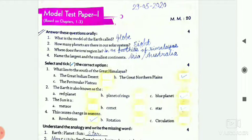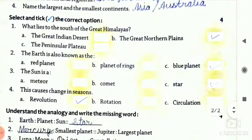Second question is, select and tick the correct option. Firstly, what lies to the south of the Great Himalaya? What do you find in the Great Himalaya? The Great Indian Desert, the Great Northern Plains, the Peninsular Plateau. So your answer is B, the Great Northern Plains.